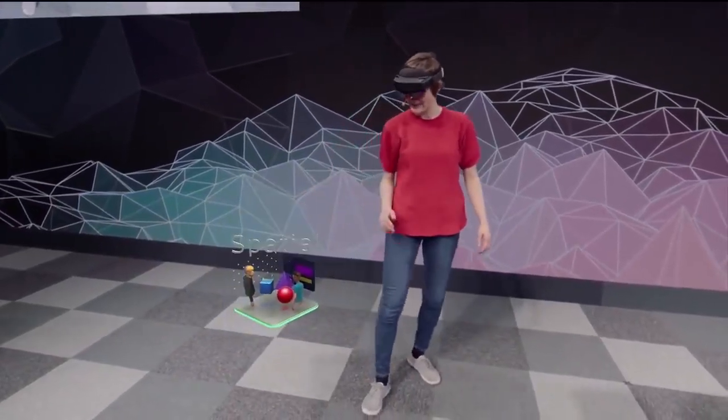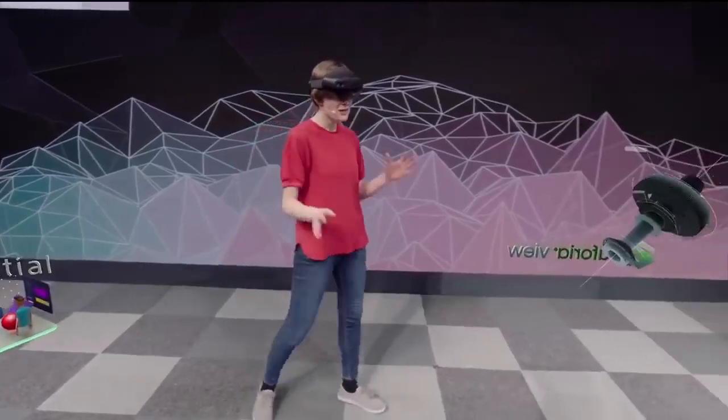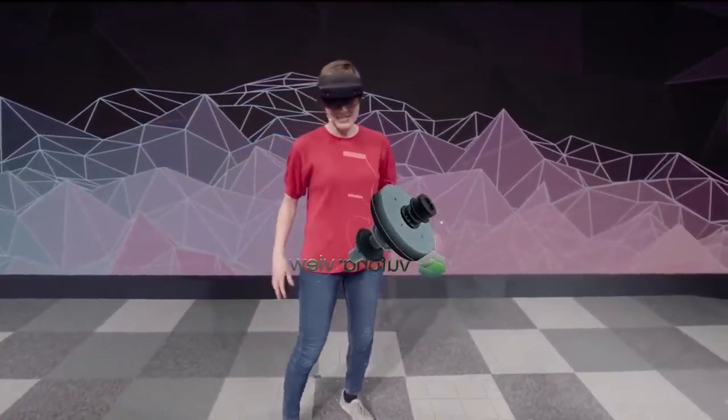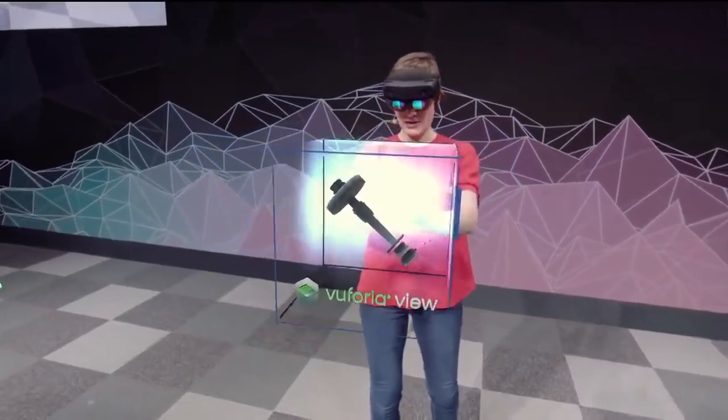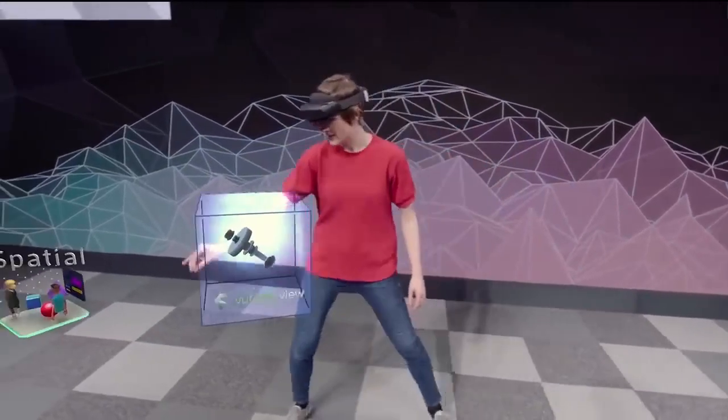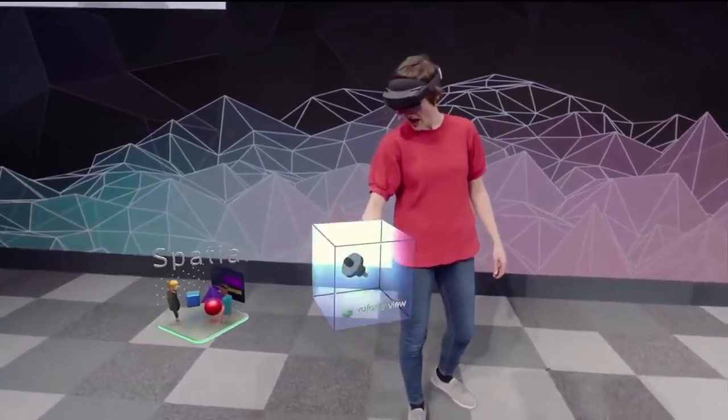This is an app I've got called Spatial. Let me just put it right there. I've got another app here called Vuforia View. Now, it's a little big, so let me just use two hands here to make it smaller, and then rotate it so you can see. There we go. And then let me put it down here in your space. Maybe make it a bit smaller. Yeah. That's nice.